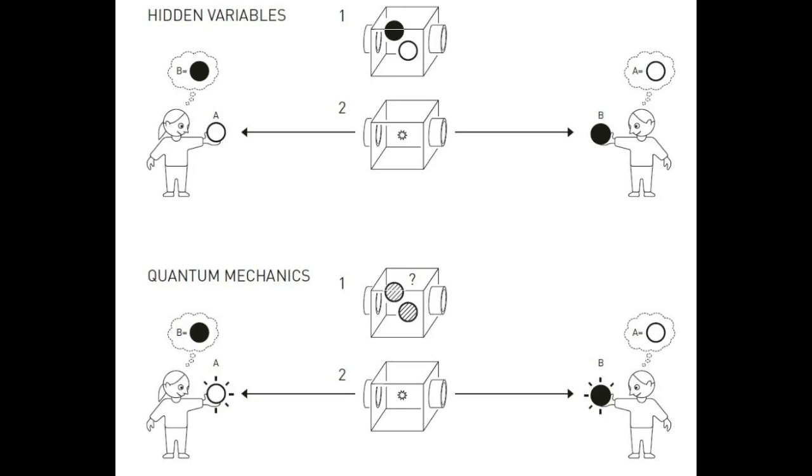Quantum mechanics' entangled pairs can be compared to a machine that throws out balls of opposite colors in opposite directions. When Bob catches a ball and sees that it is black, he immediately knows that Alice has caught a white one. In a theory that uses hidden variables, the balls had always contained hidden information about what color to show. However, quantum mechanics says that the balls were gray until someone looked at them, when one randomly turned white and the other black.